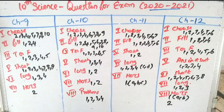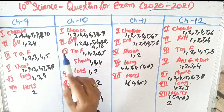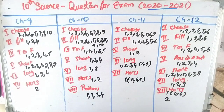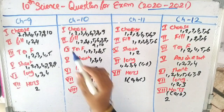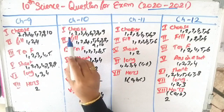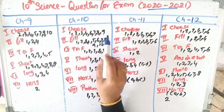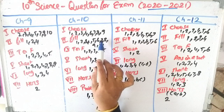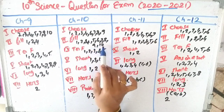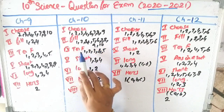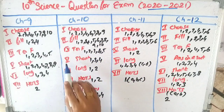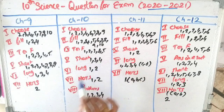In chapter 10, first row — choose the best: questions 1, 2, 3, 4, 6, 7, 8, 9. Second row — fill the blanks: questions 1, 2, 4, 5, 6, 7, 8, 9, 10. Fourth row — true or false: questions 1, 2, 3, 4, 5. Fifth row — short answer: questions 1, 3, 4.